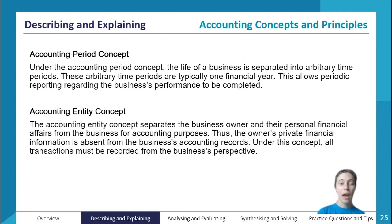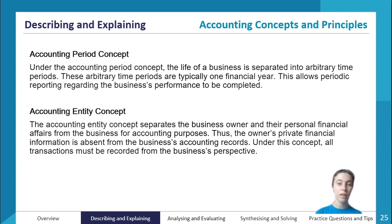Starting with the accounting period concept: this says that the life of a business is separated into arbitrary time periods, typically one financial year. This allows periodic reporting regarding the business's performance to be completed. We separate the life of the business into different financial years — for example, comparing 2019 versus 2020 — to report results via financial statements at the end of each financial year on the 30th of June.